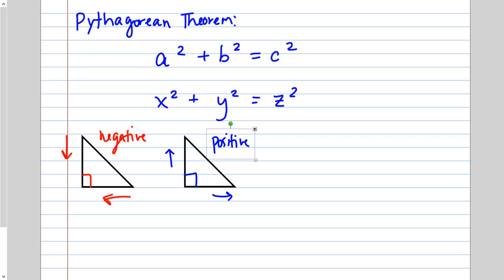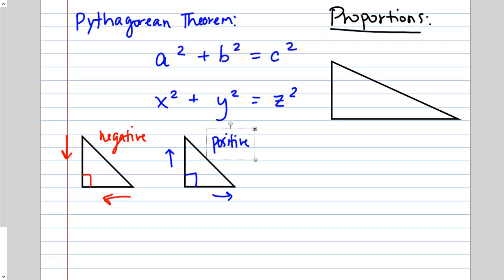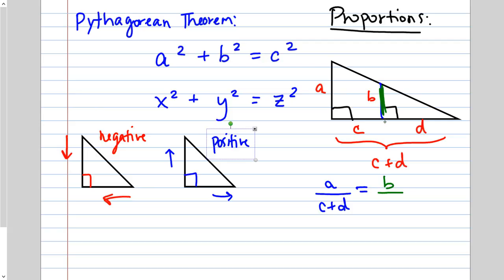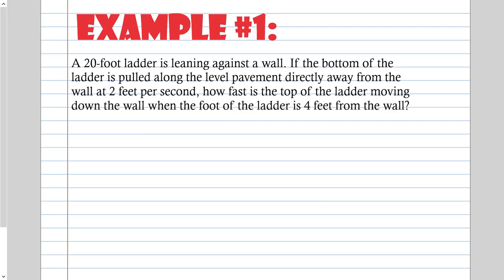We will also be doing proportions of similar triangles. We'll have a triangle cut into two similar right triangles, and label the parts A, B, C, and D, where the full base is C plus D. Then we write a proportion: A over (C plus D) equals B over D, where corresponding sides match up. This is a geometry review.